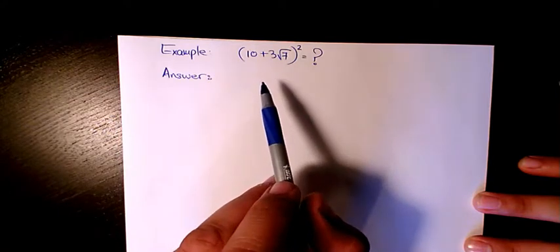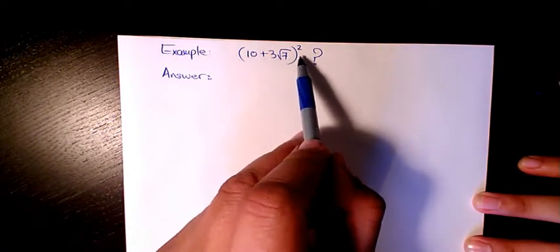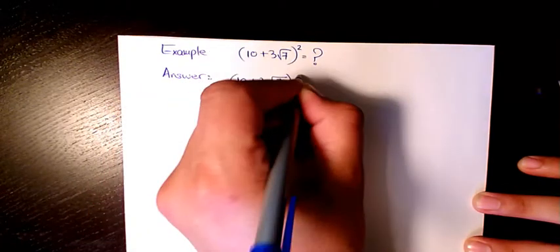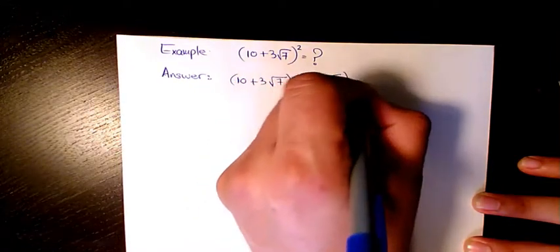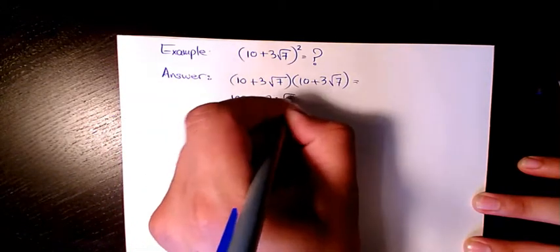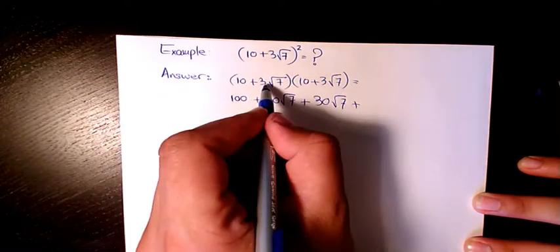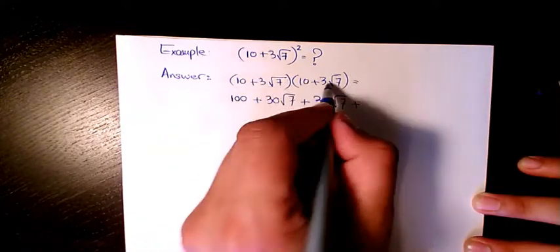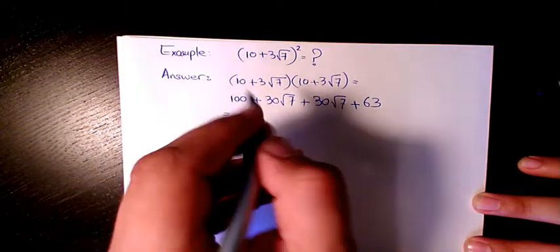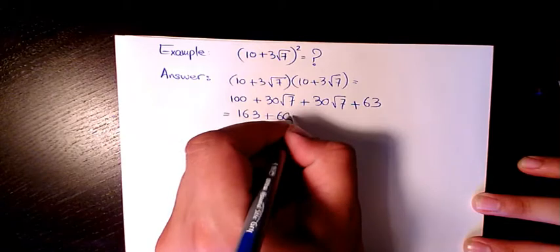First example is (10 + 3√7)². That's going to be basically (10 + 3√7) times (10 + 3√7). 10 times 10 is 100, 10 times 3√7 is 30√7, 3√7 times 10 is 30√7, then 3√7 times 3√7 will be 9 times 7 which is 63. 100 plus 63 is 163, and 30√7 plus 30√7 is 60√7.